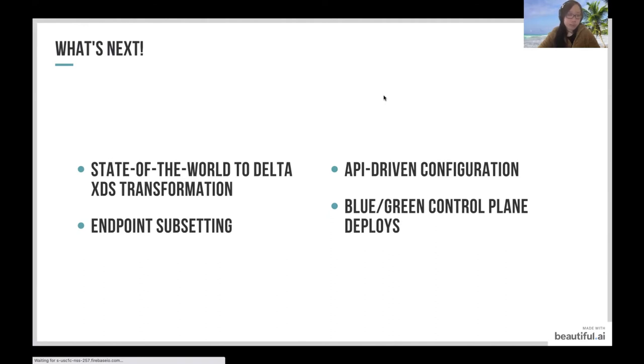Another one that we're particularly excited about is endpoint subsetting. So, in a topology that we mentioned earlier, it might not be ideal for XDS clients to be aware of clients running in a different VPC or data center. Similar to the aggregation rules, we're looking at creating a rule-based configuration where operators can use XDS Relay to send back a subset of the EDS information rather than all endpoints that exist from the control plane response.